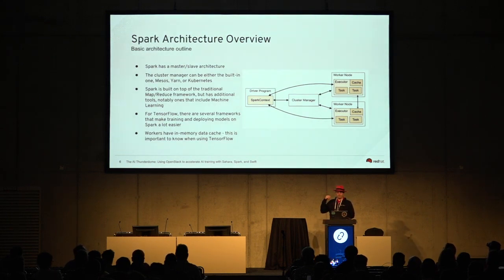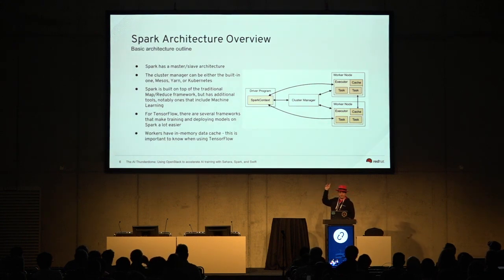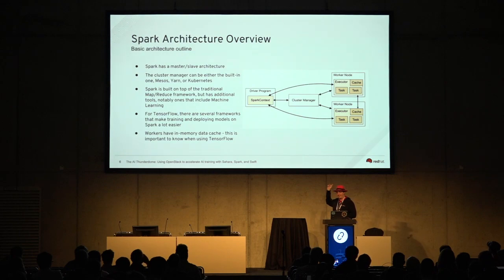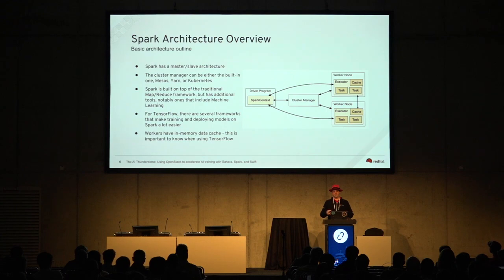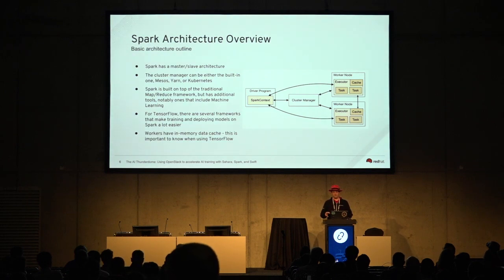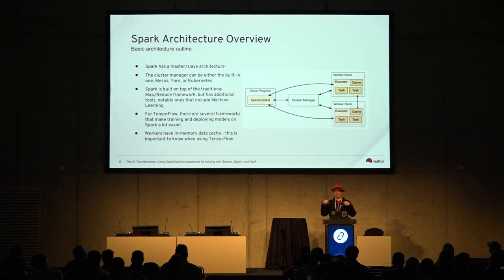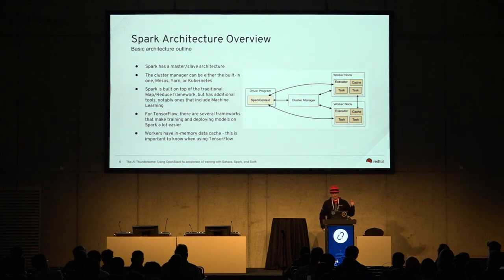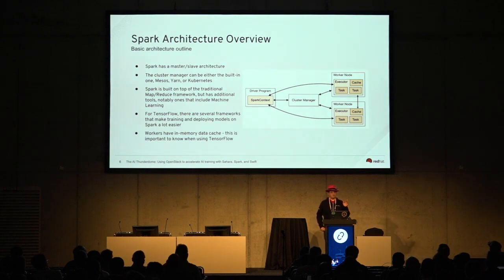One important thing to call out: in the diagram, you have a cache on the workers. That's really important to know about for TensorFlow, because TensorFlow will assume that all of the free memory on the system it's running on is usable. So when you force something into the cache in the middle of a TensorFlow execution, that could possibly cause you to start swapping in the middle of AI training, which is going to be very painful.